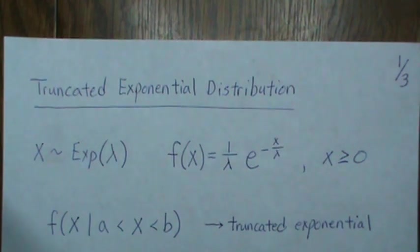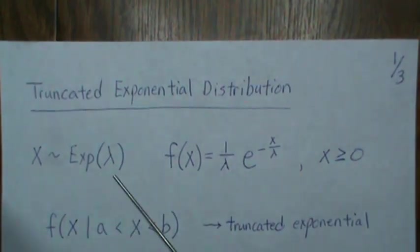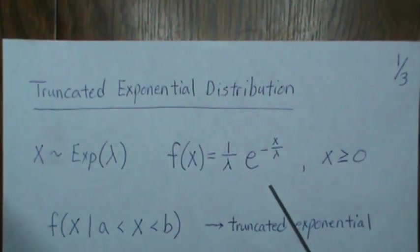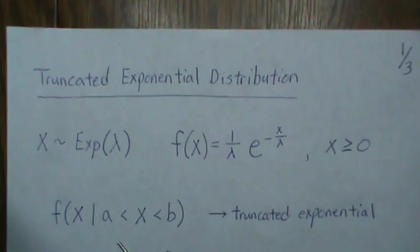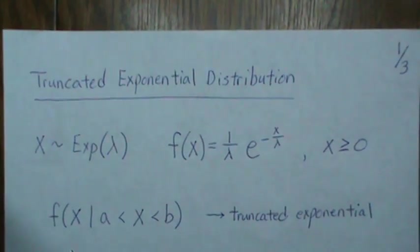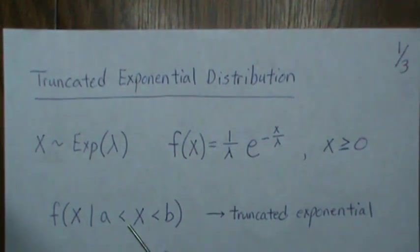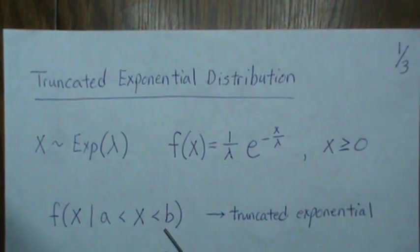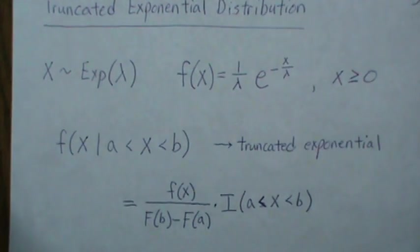Here we assume our data is exponentially distributed with some parameter lambda and here's the density for that, and X is greater than or equal to zero. Now truncated exponential is really the same X but we're restricted to a region bounded below and above and that's called a truncated exponential.